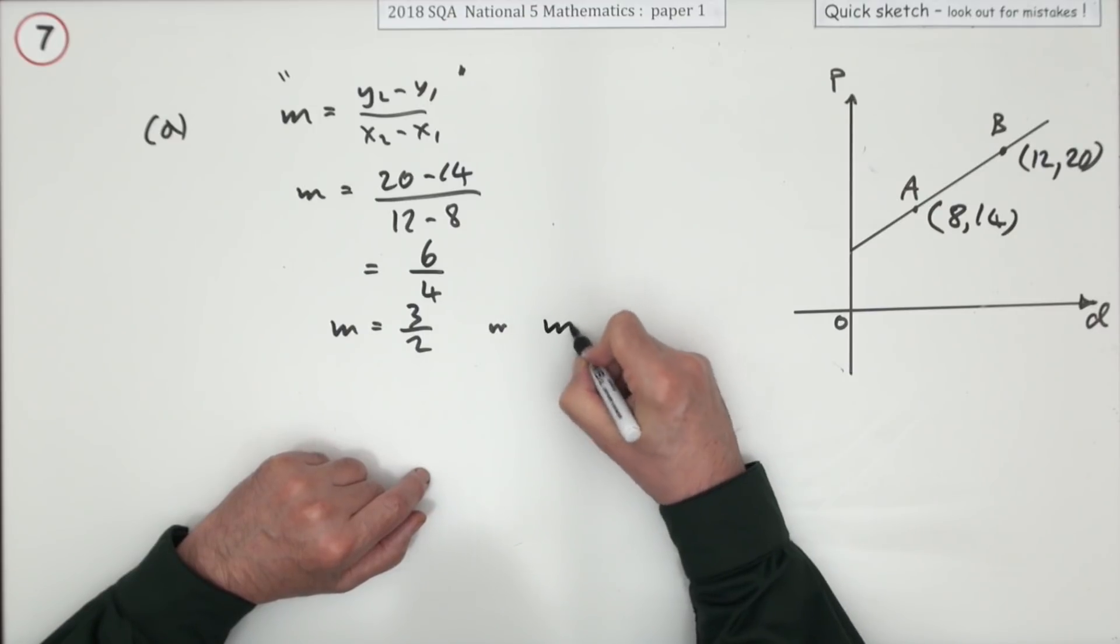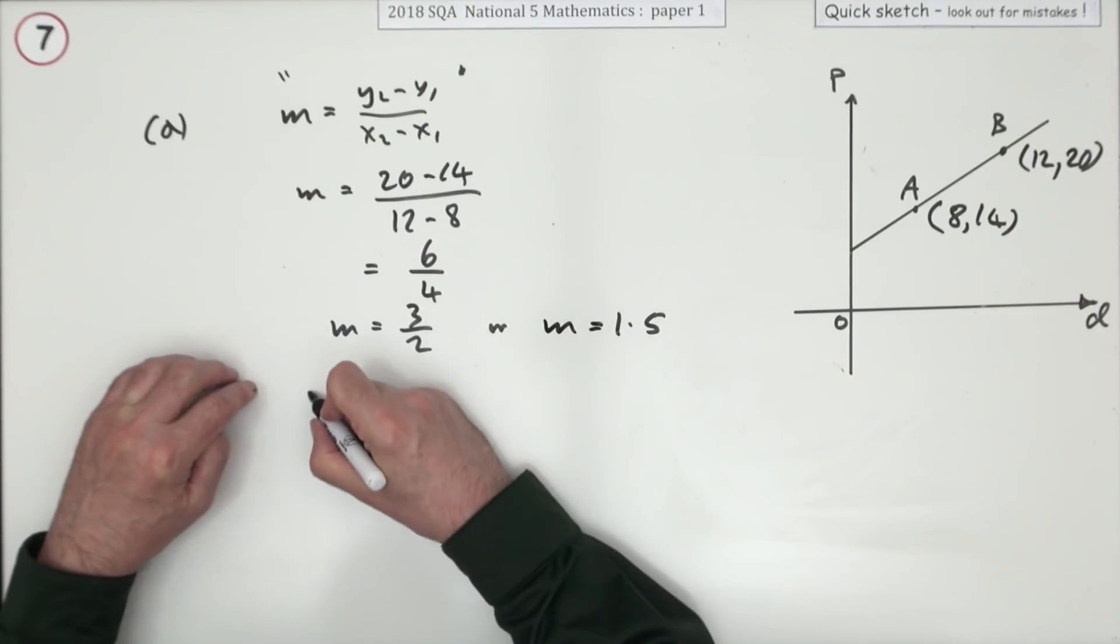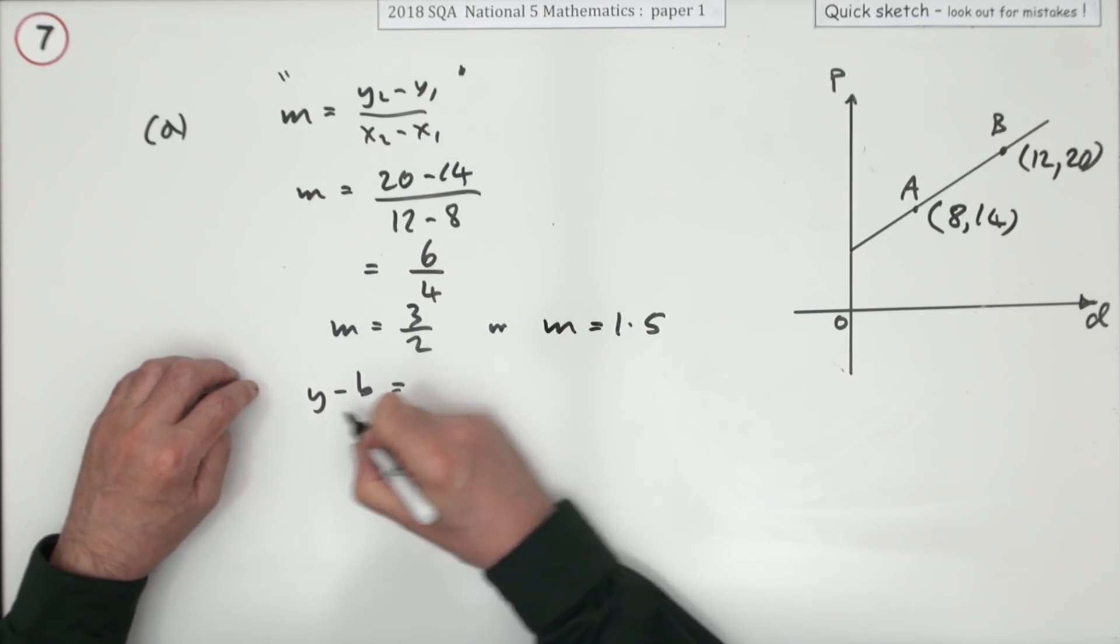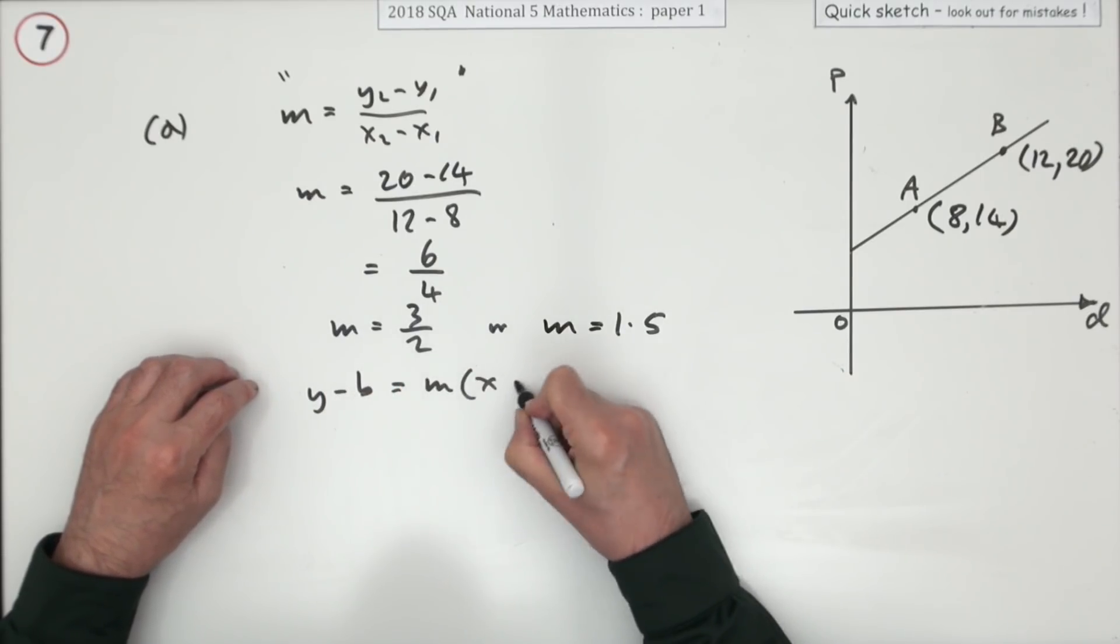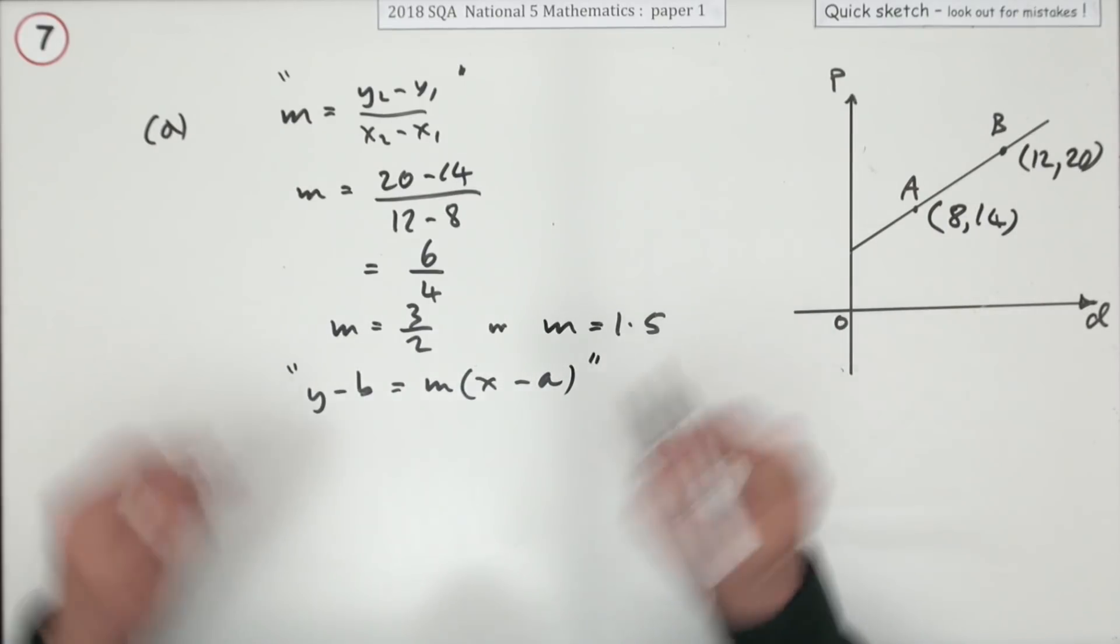I'll need to cancel that down so it goes to 3 upon 2, or if you wanted you could write m equals 1.5. Now the equation of a line, you know the form y minus b is mx minus a.